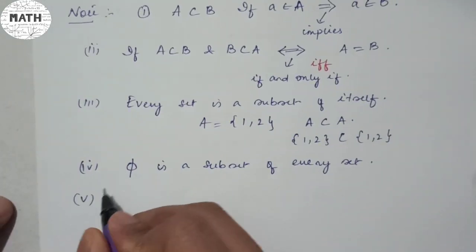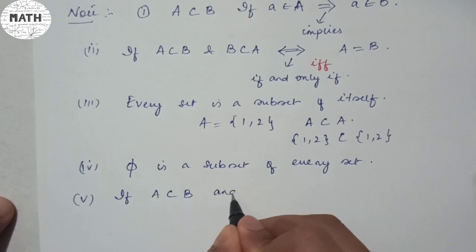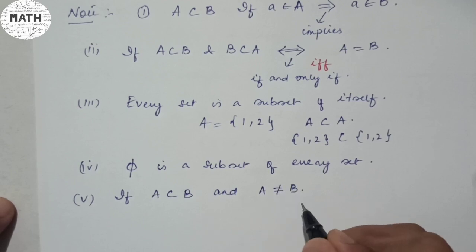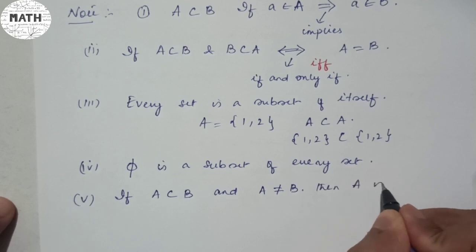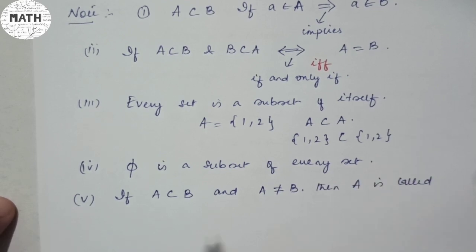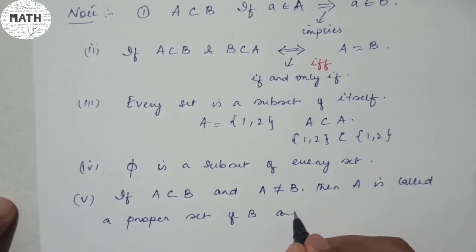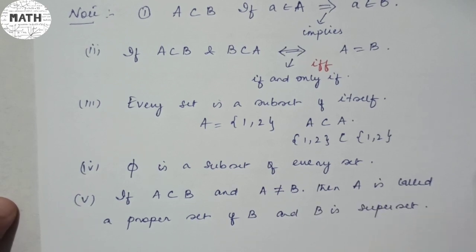Now comes point number five: if A is a subset of B and A is not equal to B, then A is called a proper set of B. And B is nothing more than your superset. Pause the video and check once again.